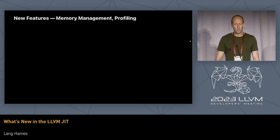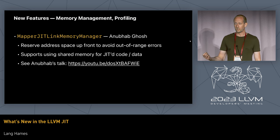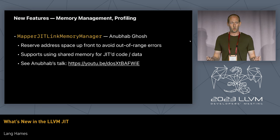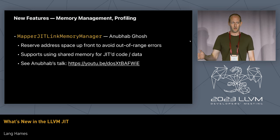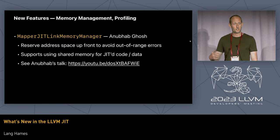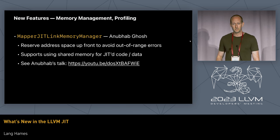On to generic APIs — we have new APIs for memory management and profiling. The Mapper JITLink memory manager was contributed by Anubhab Ghosh for his Google Summer of Code last year. This is an allocator that reserves address space up front to avoid relocation out-of-range errors. If you've ever used ORC or MCJIT with the default memory manager and gotten a relocation out-of-range error, the solution is almost certainly to move to ORC and use Anubhab's allocator. You can also swap out the underlying allocation primitive, and there's off-the-shelf support for shared memory for JITting code and data when running JITted code in a separate process on the same machine.